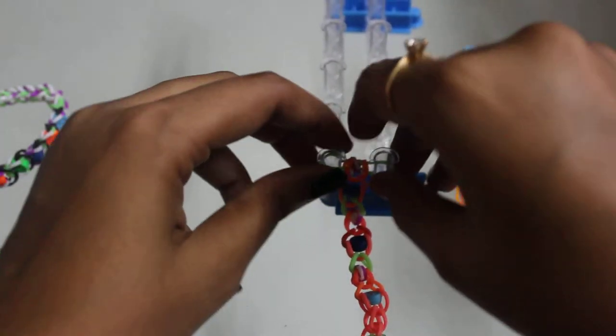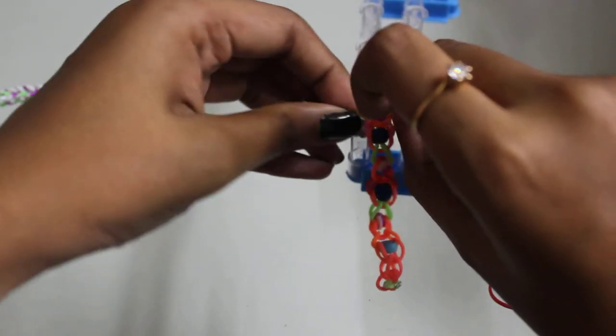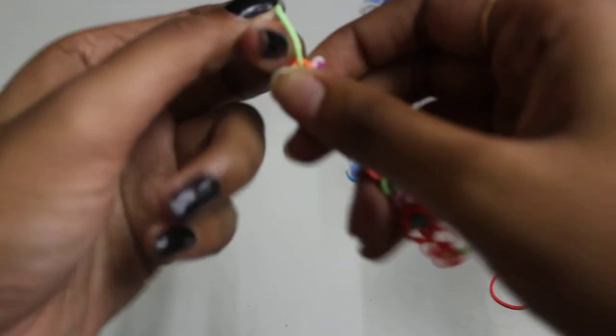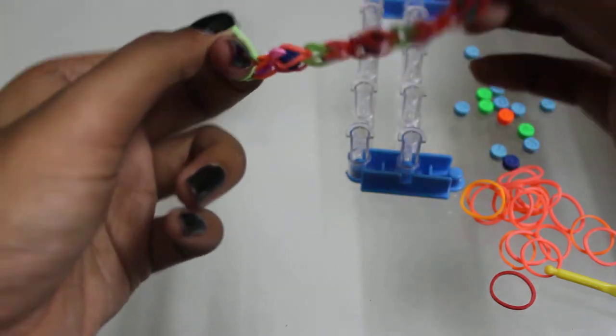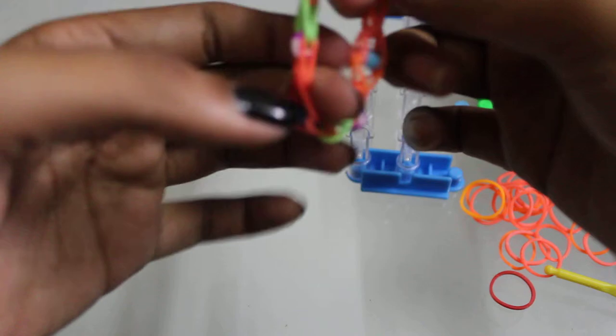Now you can simply take it over, like this. Stretch it and take the hook side and lock it. This is quite small.